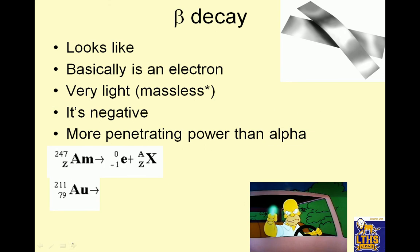Beta decay looks like this: zero over negative-1 beta, or zero over negative-1 E. Basically, it's an electron. It is very light — massless, meaning it has the mass of an electron, which means its mass is negligible. It has a negative charge. It's more penetrating than alpha, so it takes a sheet of metal to block it, or thick plywood.